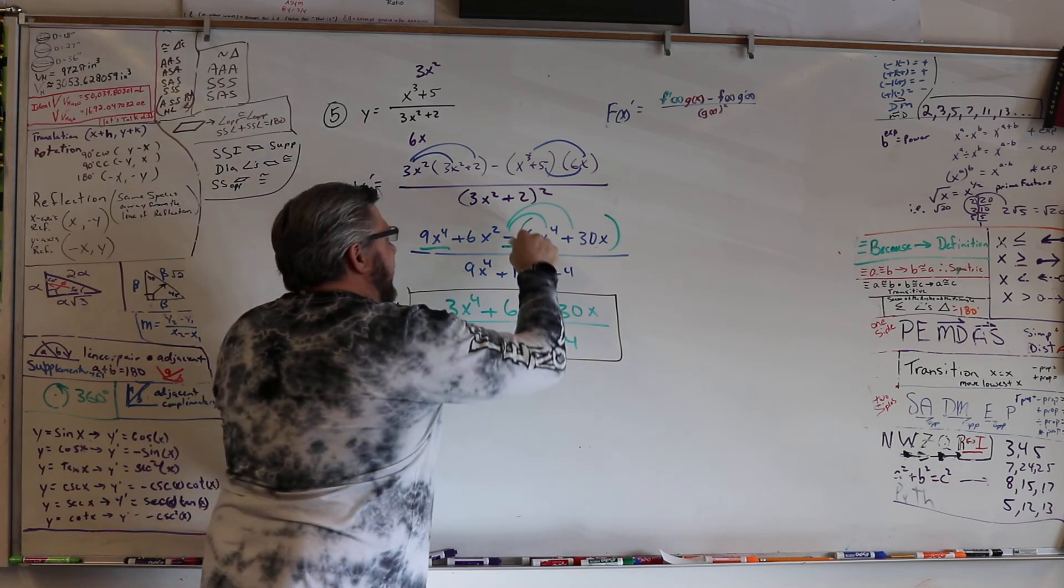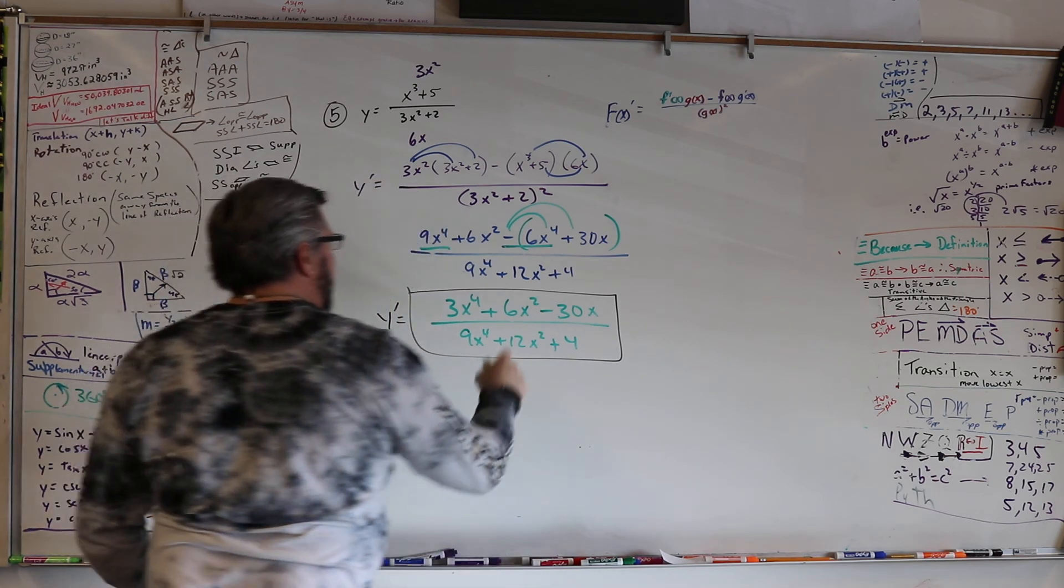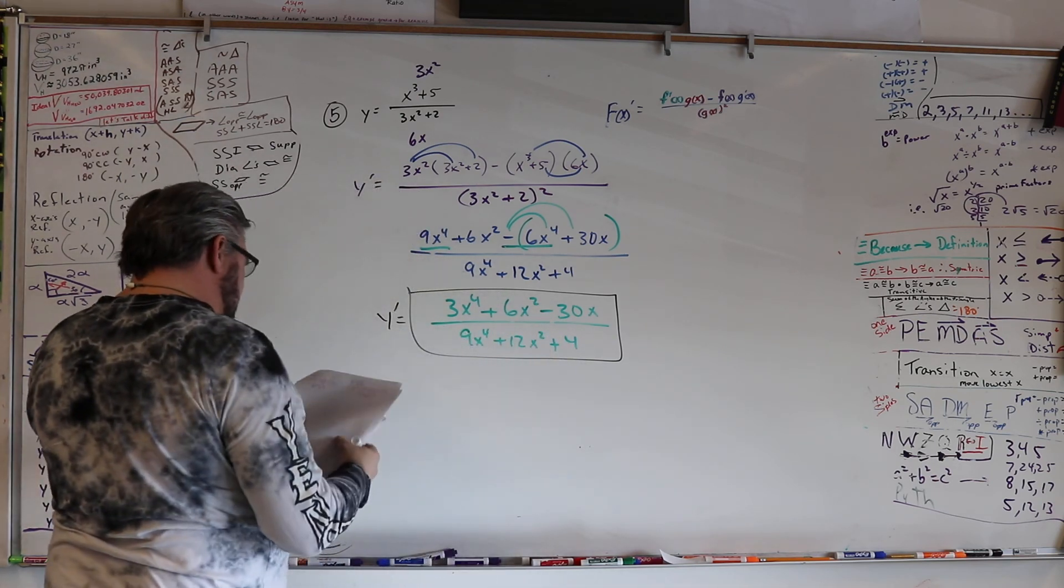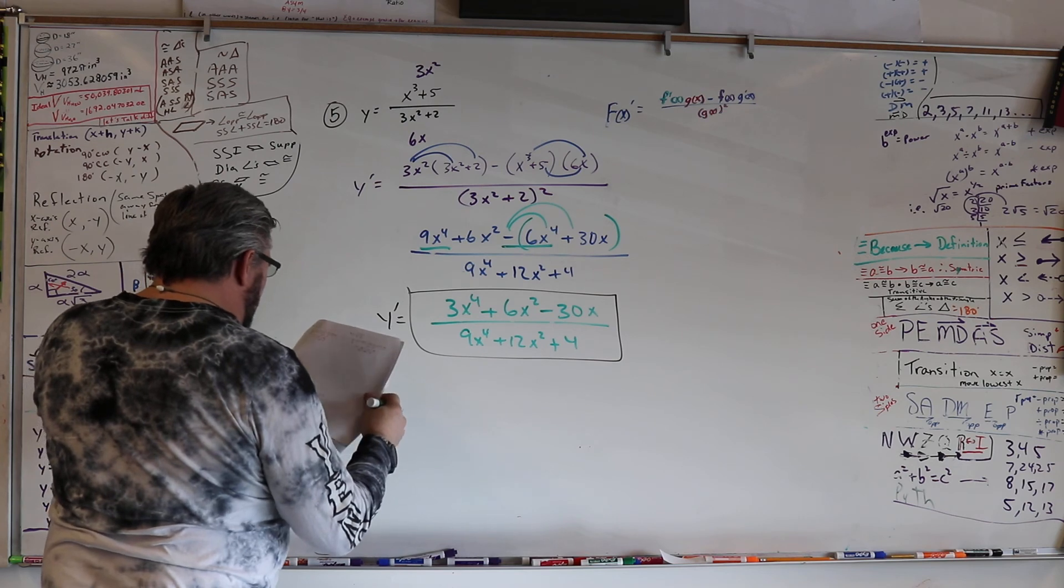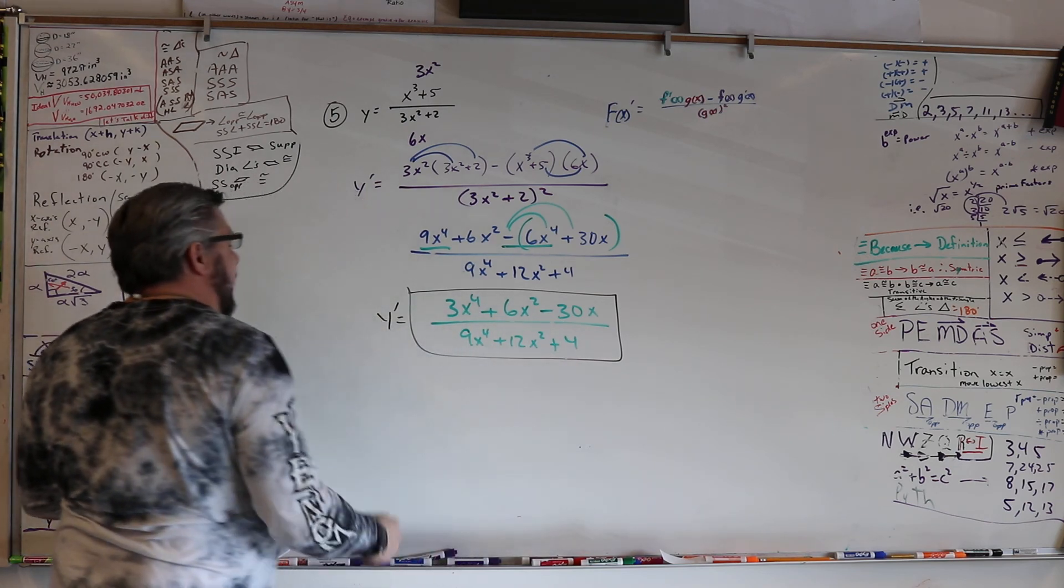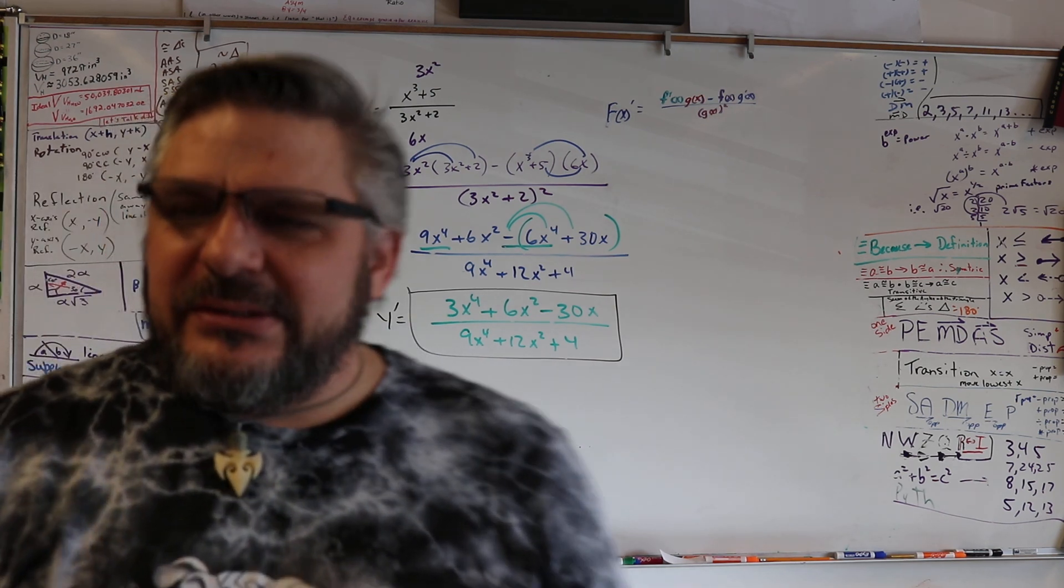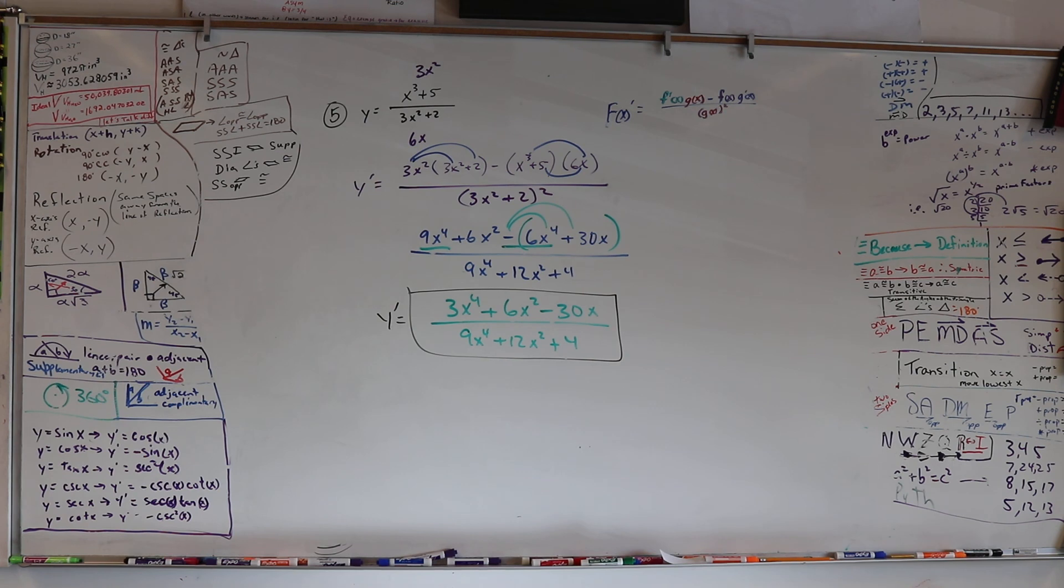But I forgot to give it to this guy, and that's super important. So, that's why we got a negative on the end there. That's good. And then we got 9x to the 4th plus 12x squared plus 4. And there you are. That was easy. This is cake now.